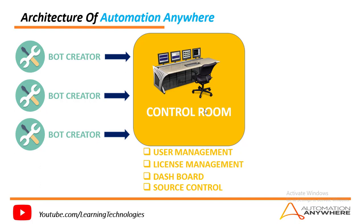In the dashboard, you can see how many bots are running, how many bots have failed, and how many bots have succeeded. All these things can be managed using the dashboard. License management is where purchased licenses for automation are configured in the Control Room.